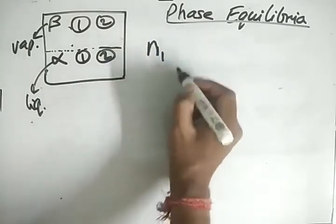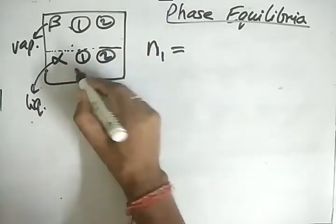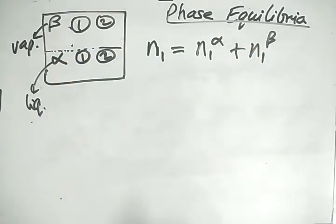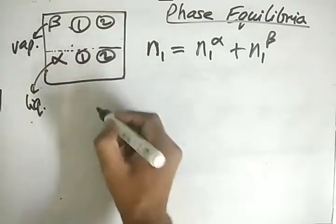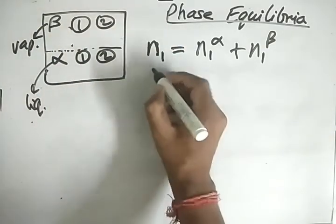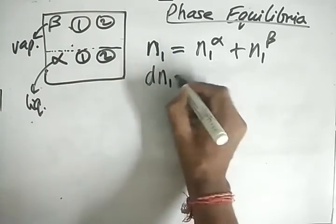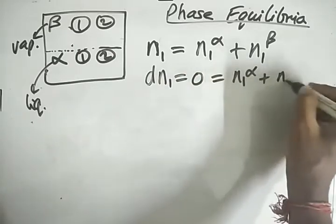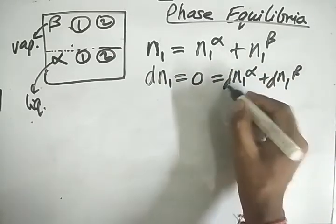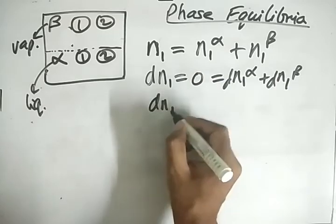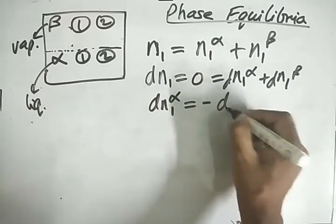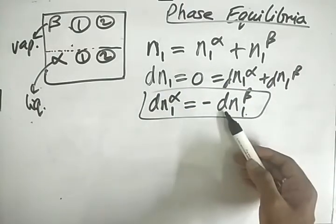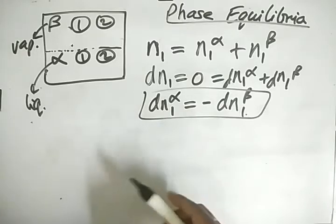Since this is a closed system, the total moles of compound one — n1-alpha plus n1-beta — is constant. Differentiating gives zero, so dn1-alpha plus dn1-beta equals zero. Therefore, the change in moles of one in the alpha phase is the negative of the change of moles of one in the beta phase: if one increases, the other must decrease.